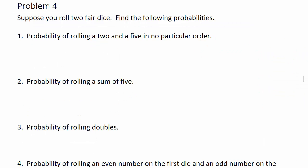Alright, now suppose you roll two fair dice — find the following probabilities. We'll need to write out the sample space. One way to do it is to write the first die going across the top and the second die going down the side.